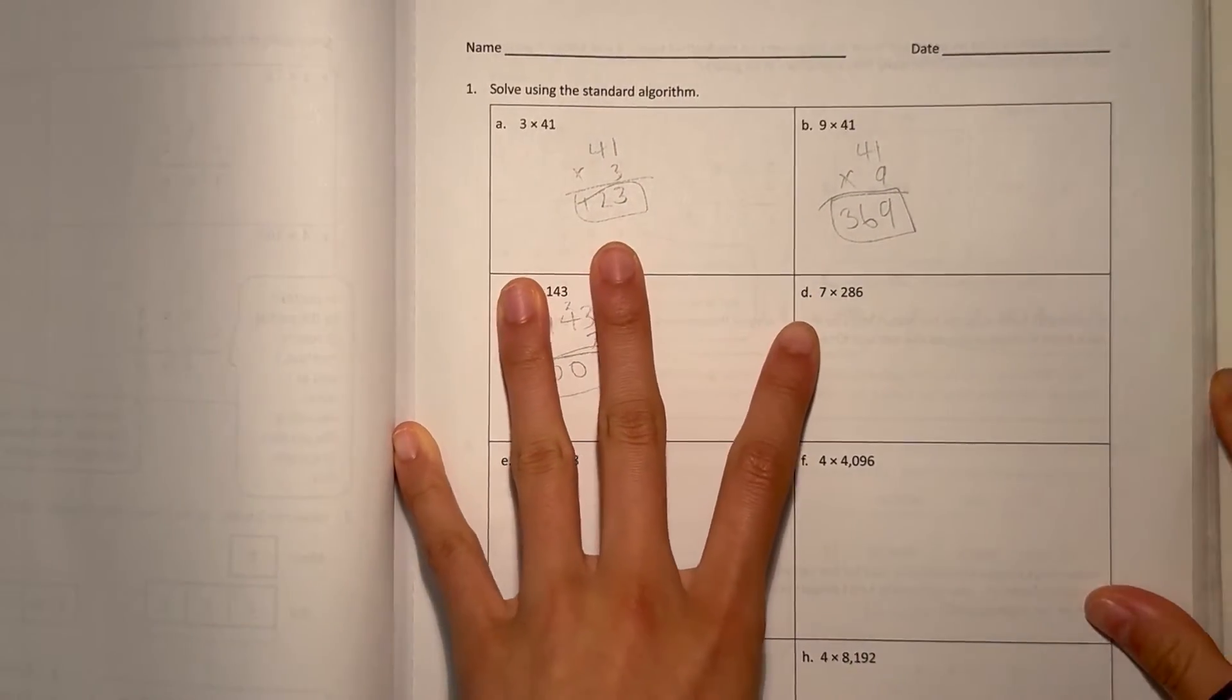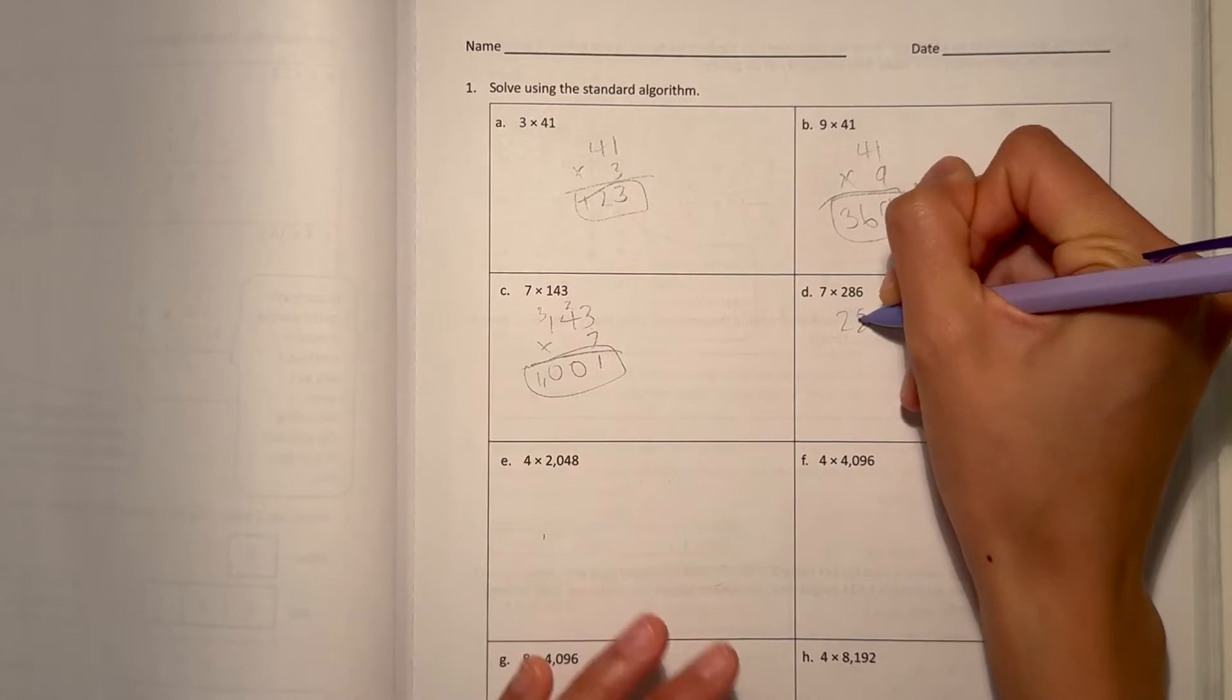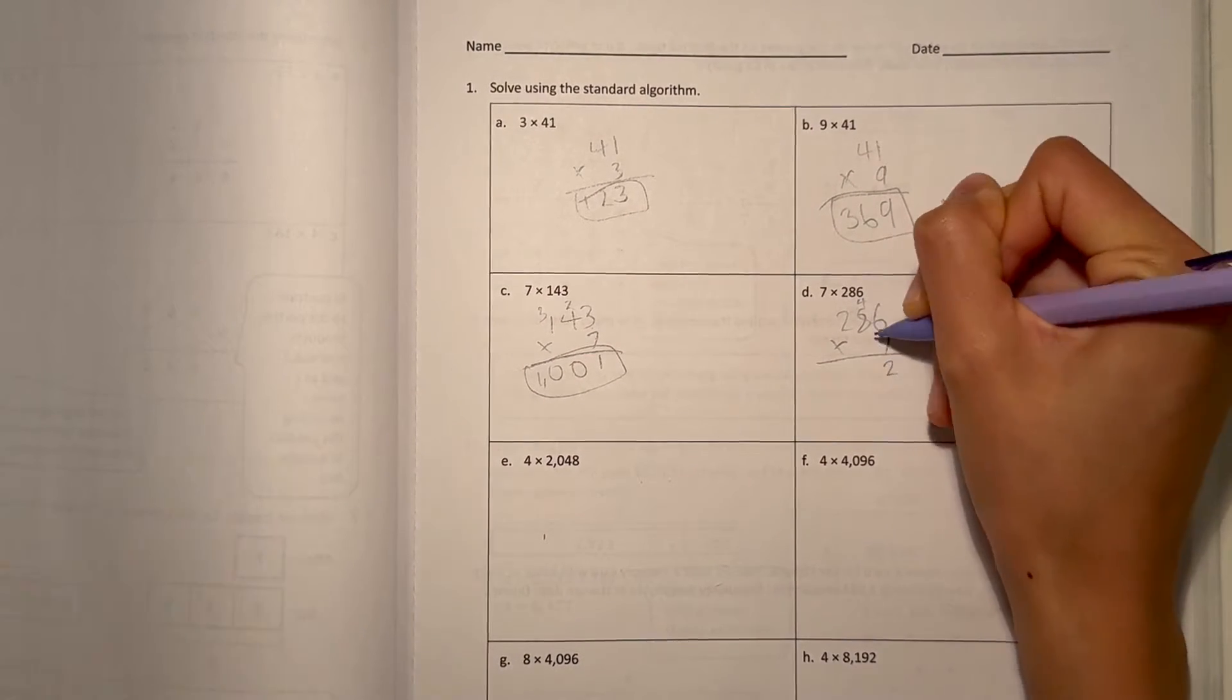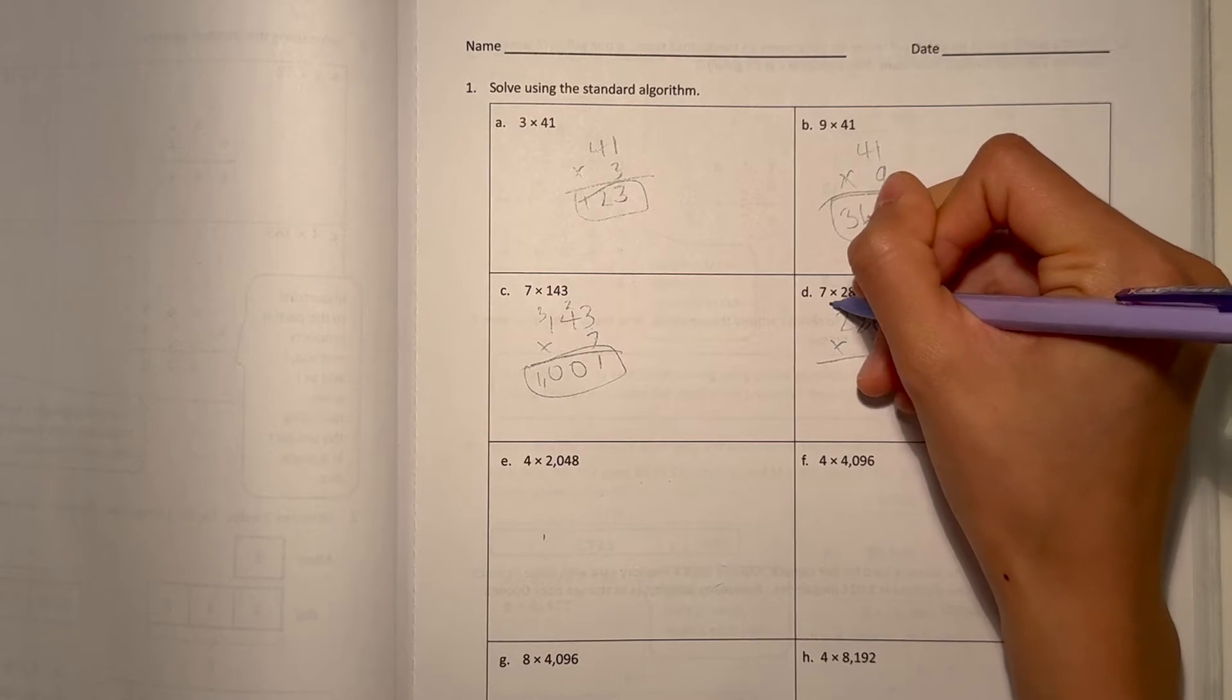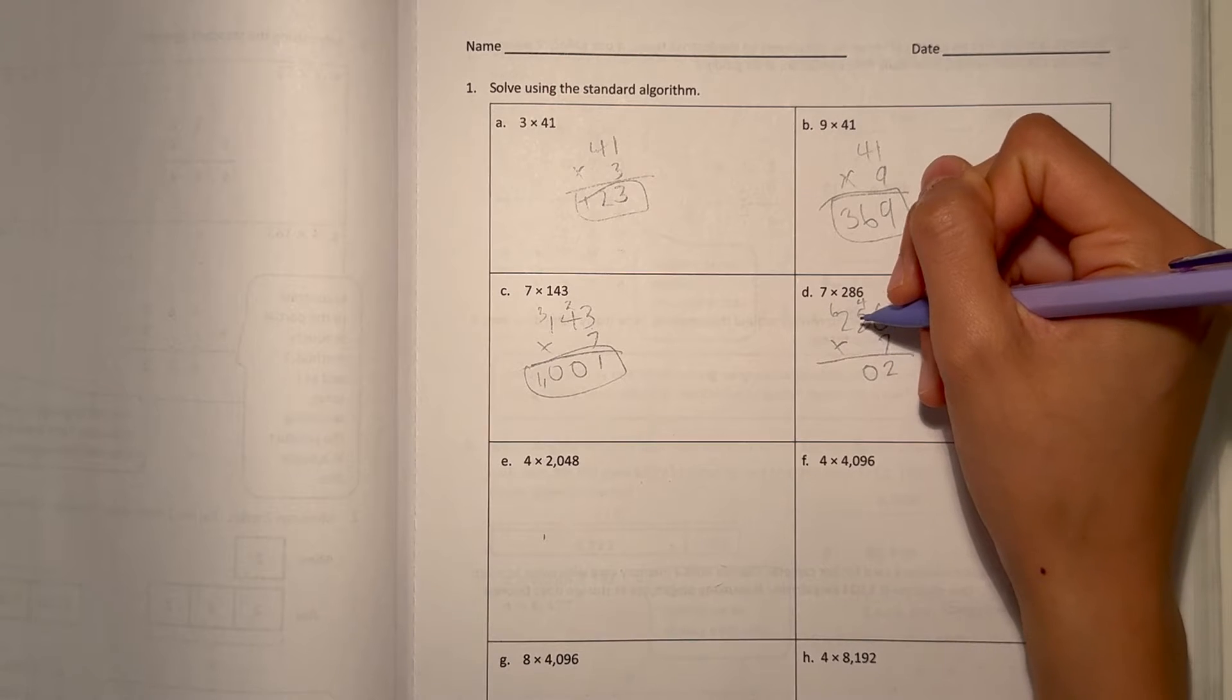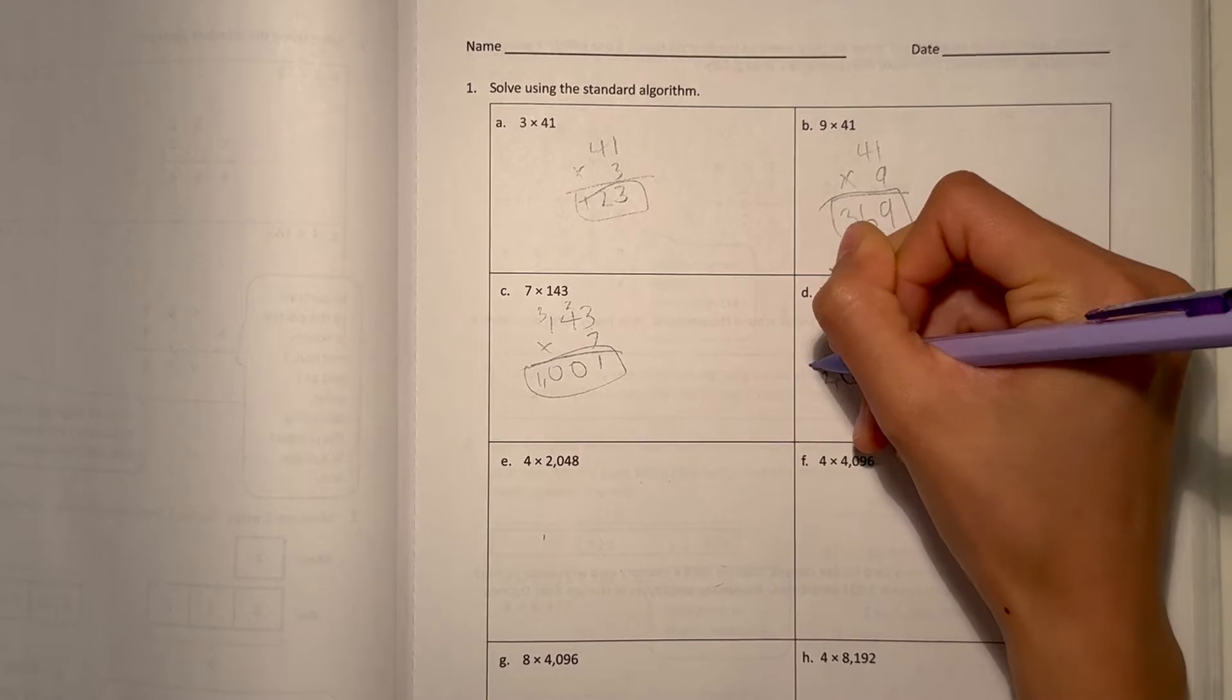Alright, and D, 286 times 7. 6 times 7 is 42. 8 times 7 is 56, plus 4 is 60. And 2 times 7 is 14, plus 6 is 20. So 2,002.